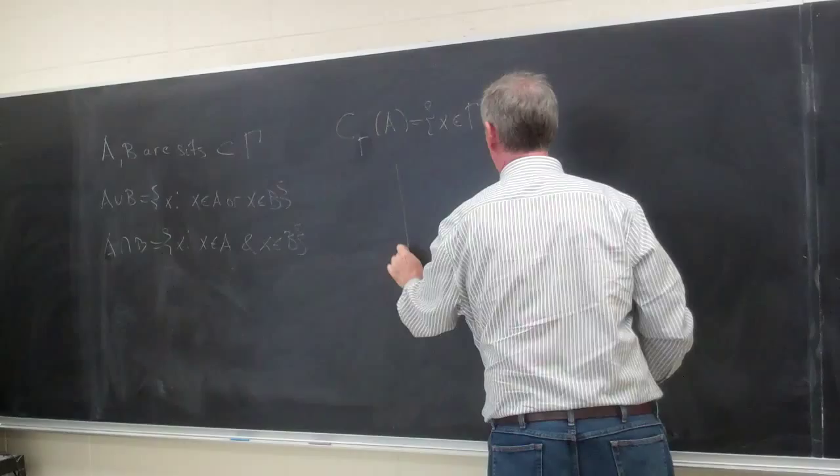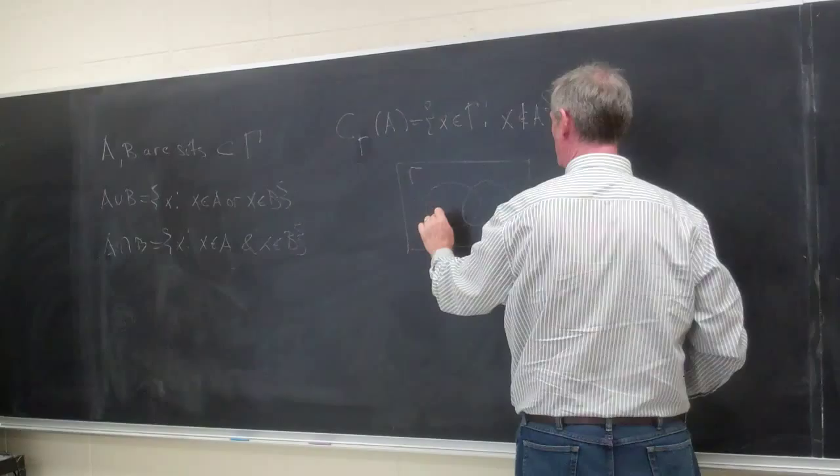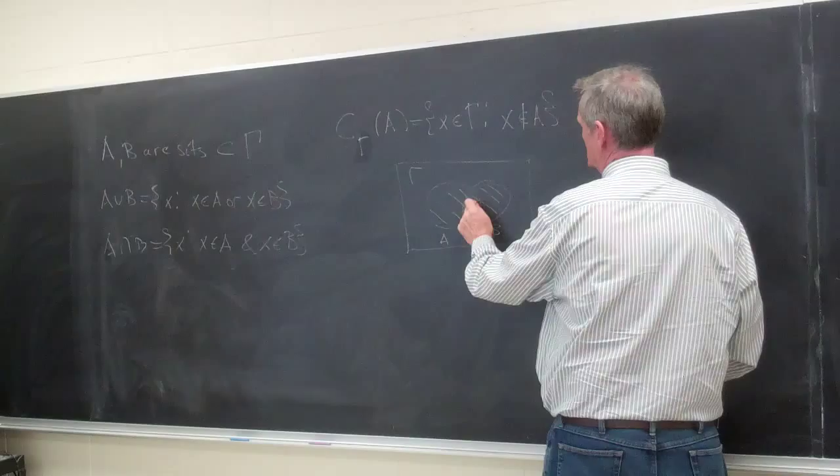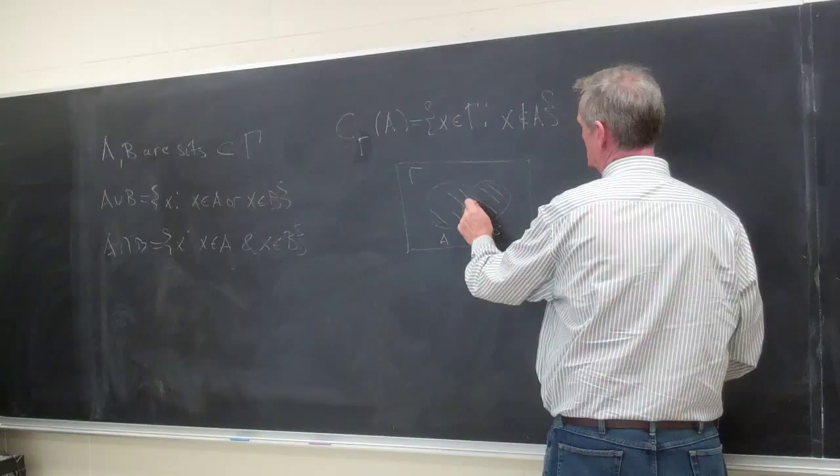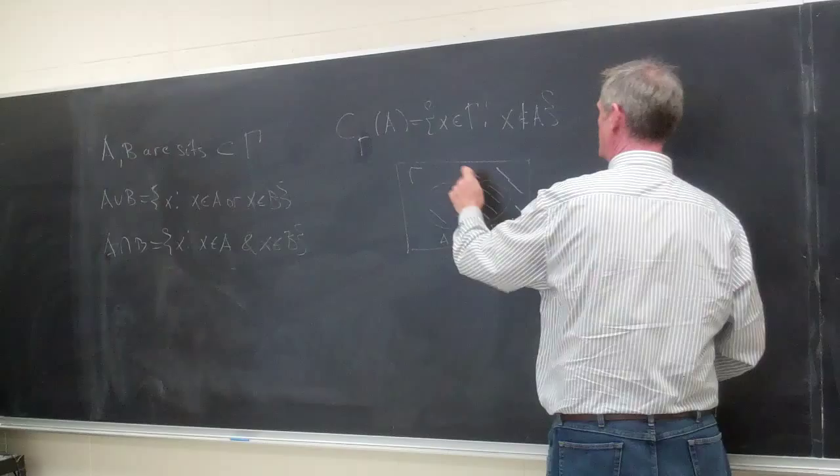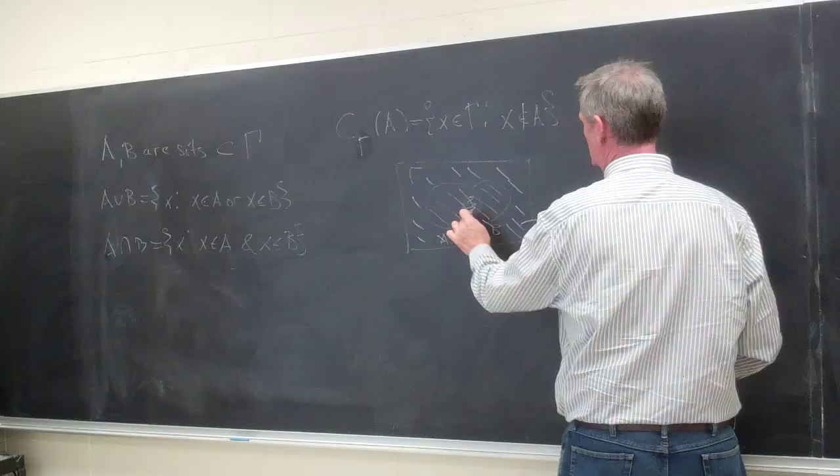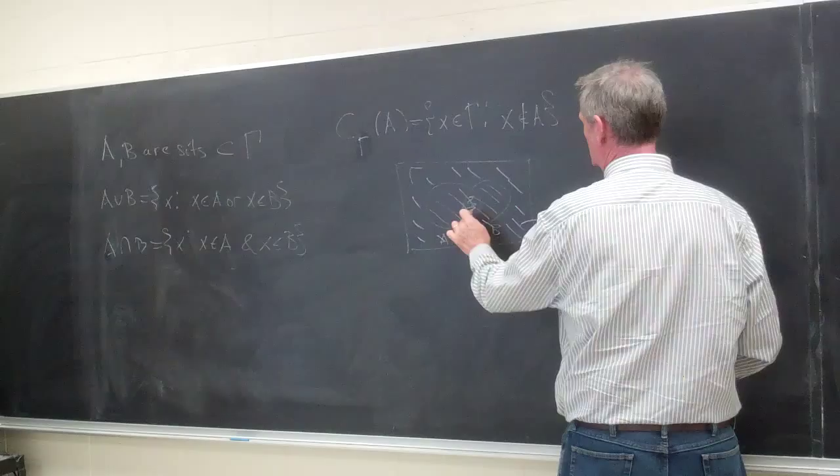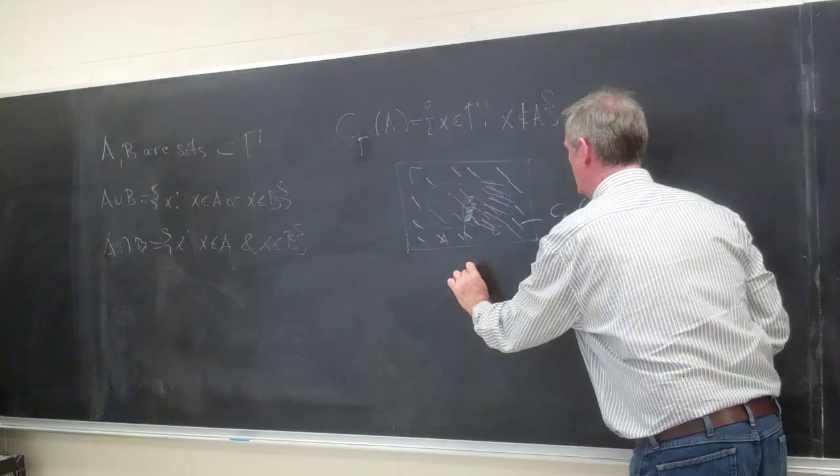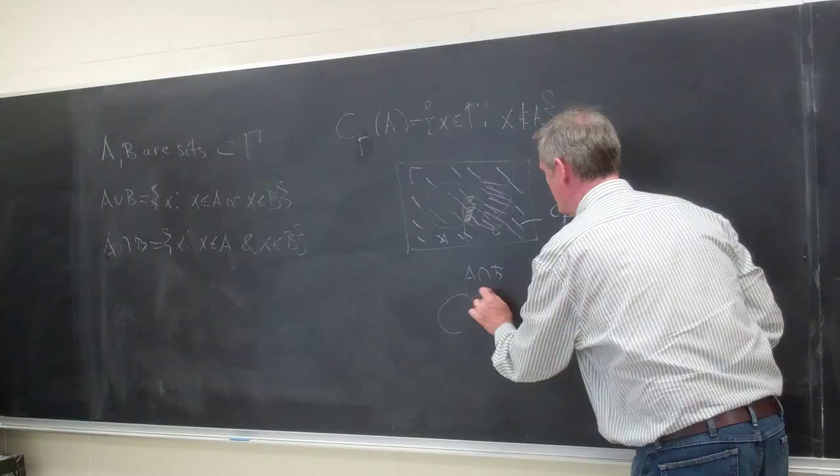And schematically, of course, we have this is our set gamma, this is our set A, this is our set B. The union of the two sets is this, the intersection of the two sets is this, and then the complement of the two sets is that. So this is the complement with respect to gamma of A. This is A intersect B and then A union B is that bit there.